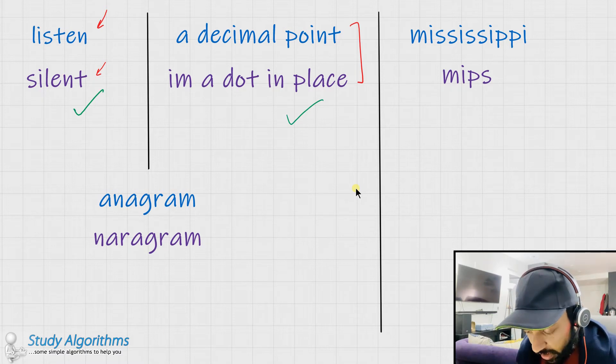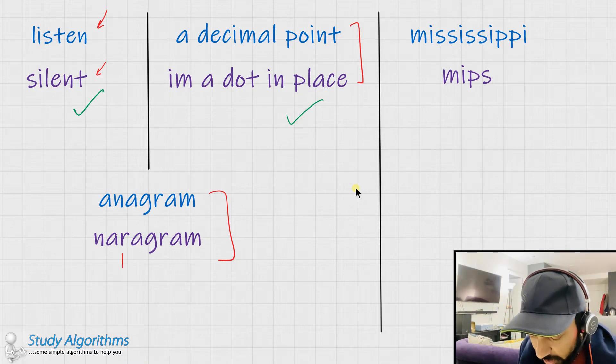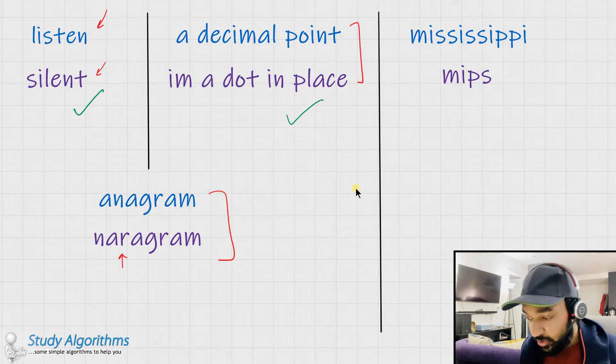If you see our third example, anagram and anagram, you would see that the letter R is occurring extra. And hence, this is not a pair of valid anagrams.